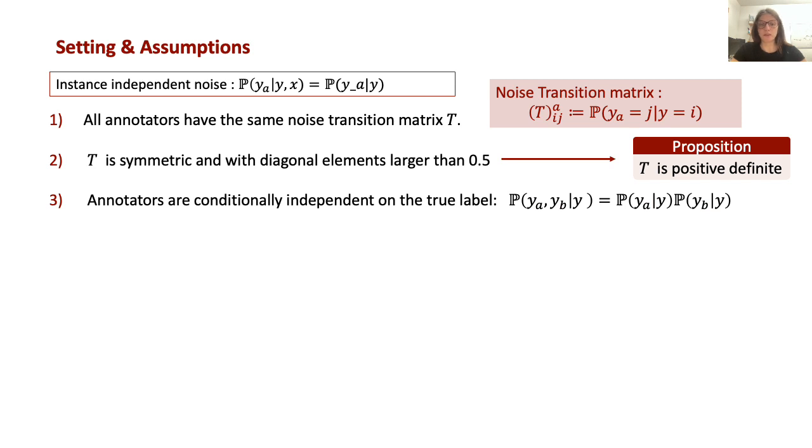Moreover, we assume that the annotators are conditionally independent given the true label, and we assume additionally that the class distribution is known, at least for the theoretical study. In particular applications, we have observed that an estimation of this distribution can also be used.